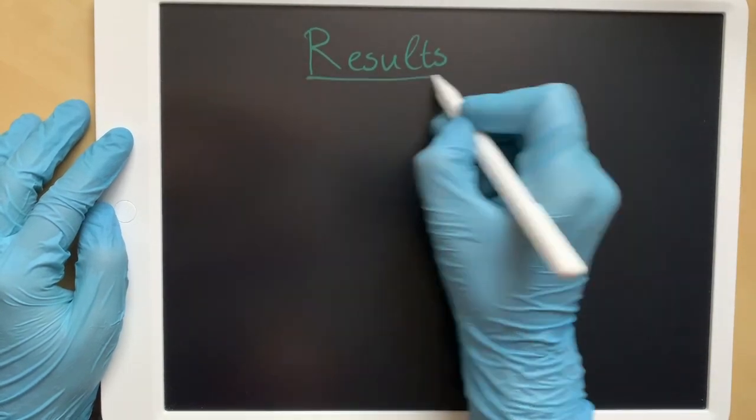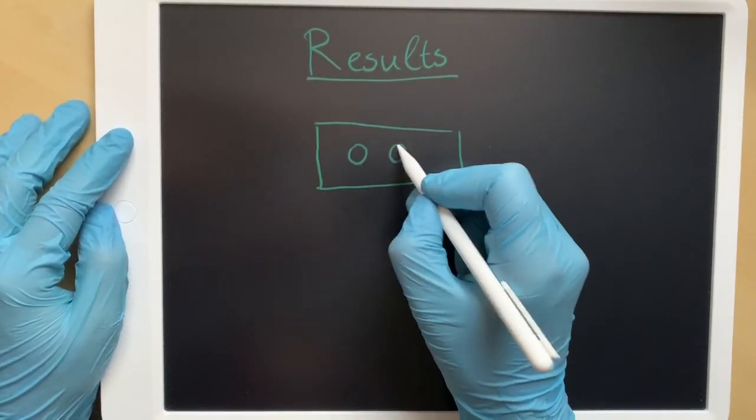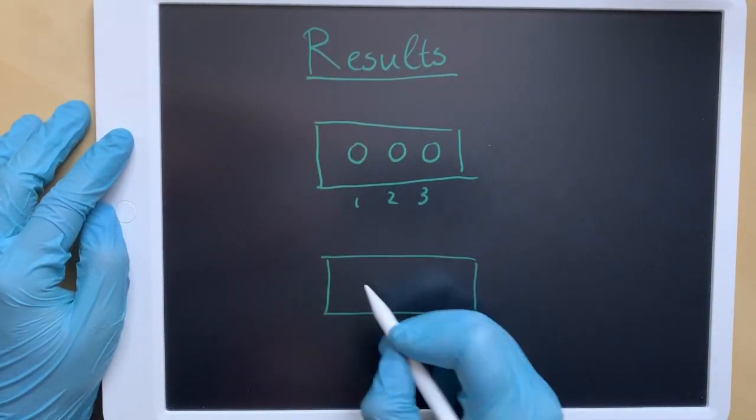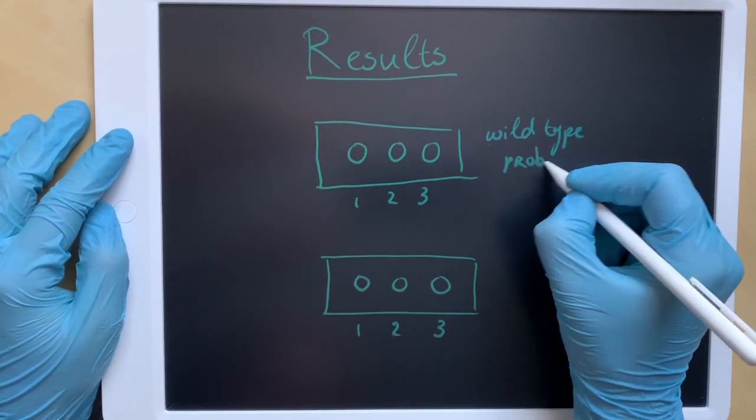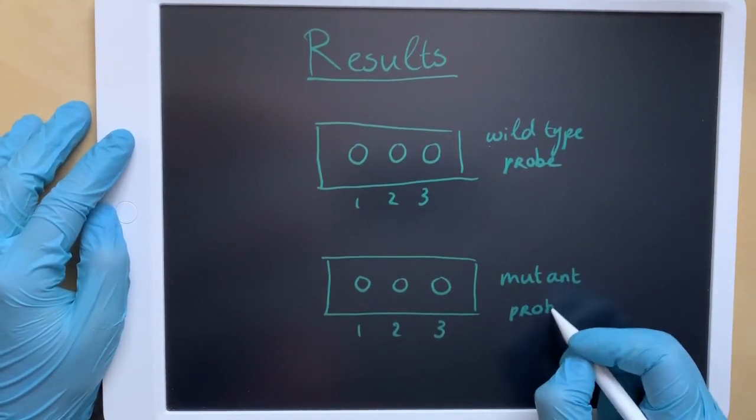Interpreting results. Let's say we've taken DNA samples from three patients. In the sample of patient 1, only the wild-type probe is bound to the DNA, meaning that patient 1 is homozygous for the normal allele.